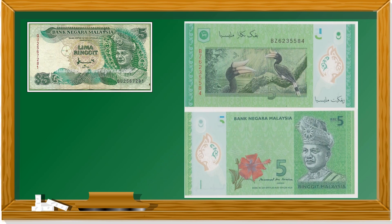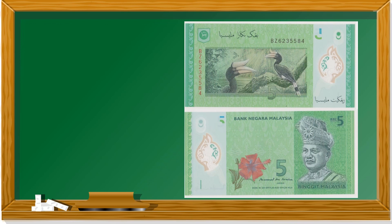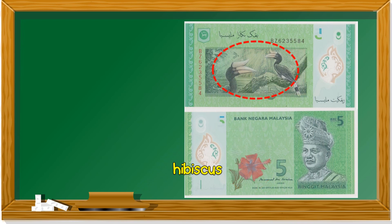This is the old five ringgit note. It's also green, like the new ones. What color is it? It's green. What can you find in front? The hibiscus flower. At the back, these are hornbills - burong kenyalang.